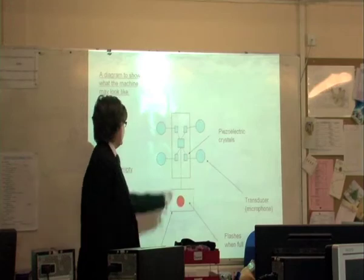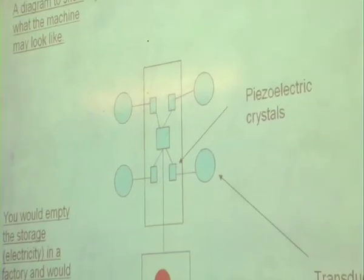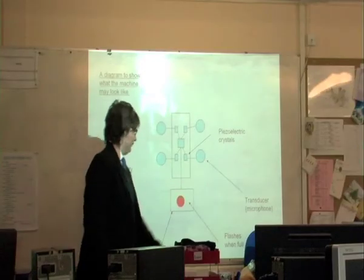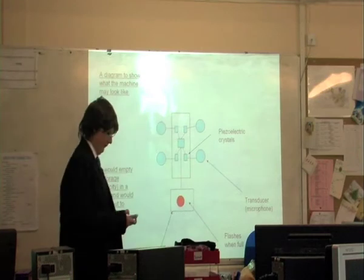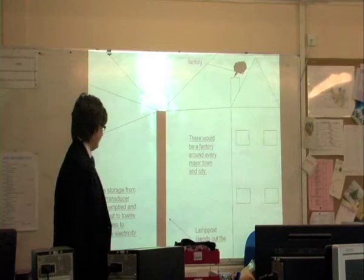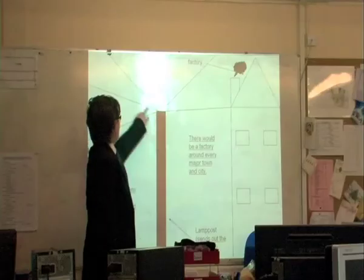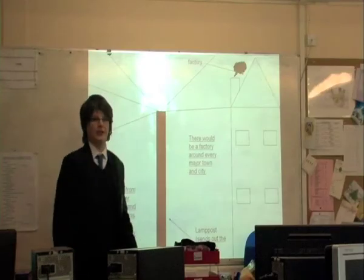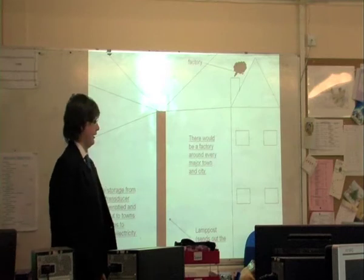They will then generate electricity which will then go to a storage facility which will flash and then fall. It can be used in a factory. The lamp hooks would be sent out to loads of other houses and factories around to supply electricity.